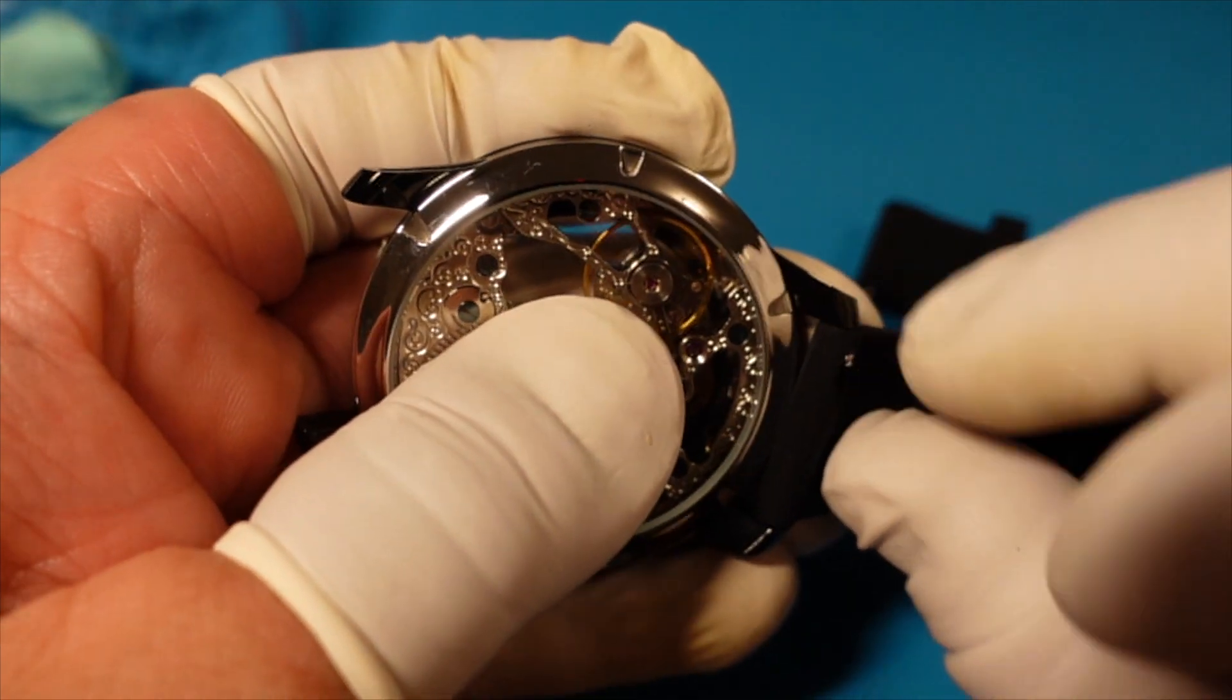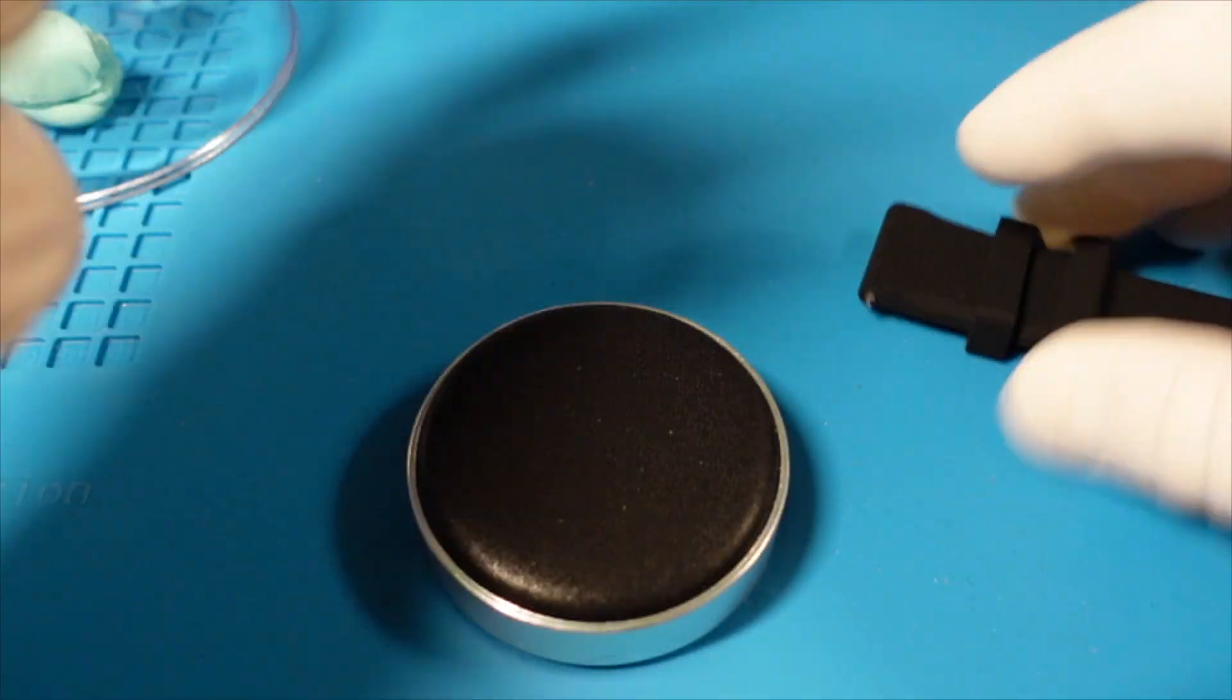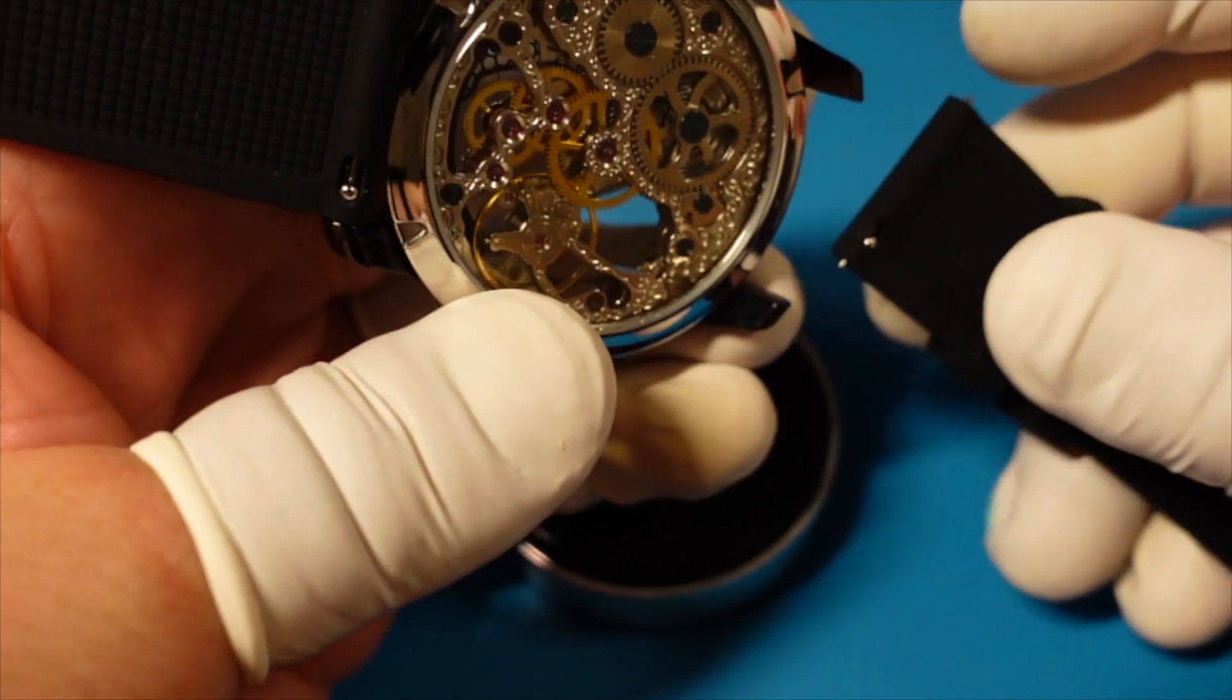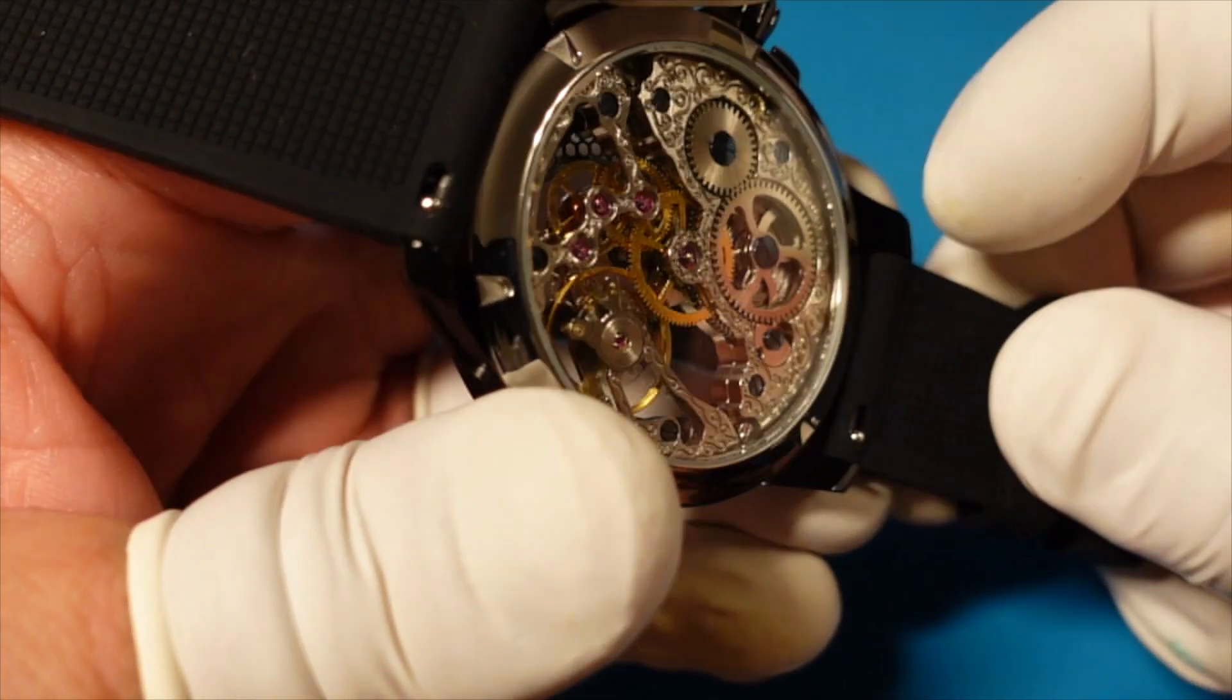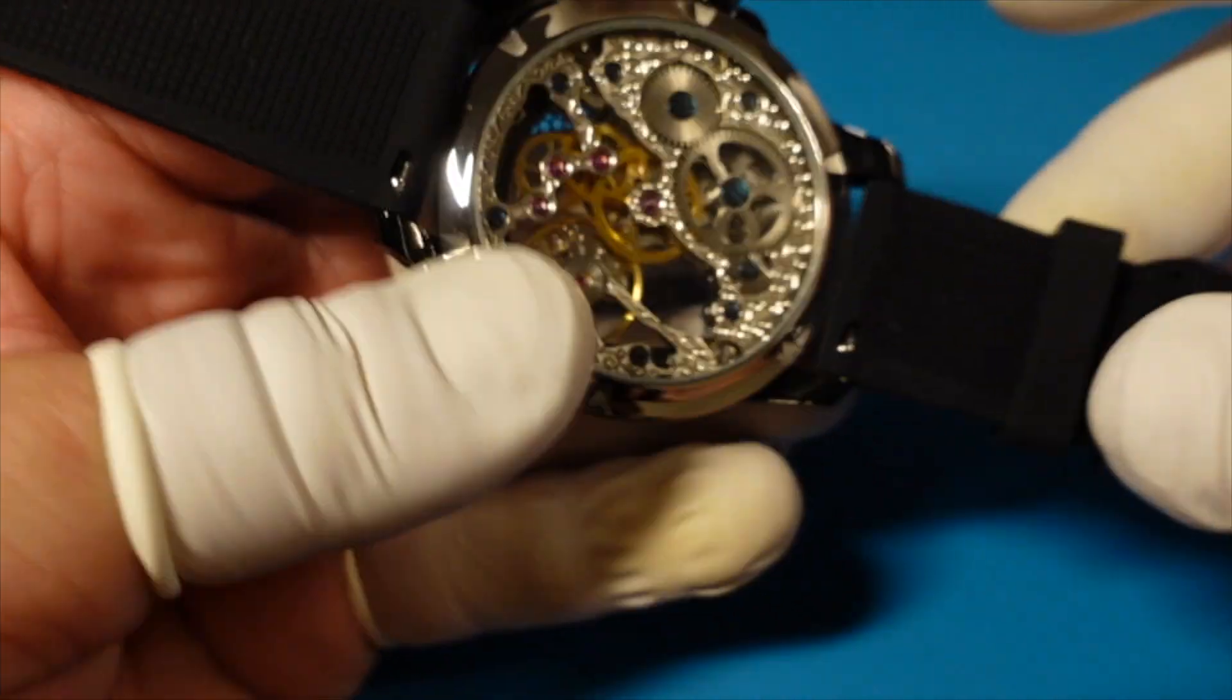As I said at the start of the video, this is an inexpensive build. Therefore, I found a 22mm black rubber band with an easy install mechanism and a silver clasp. I believe for this watch, it is fit for purpose.